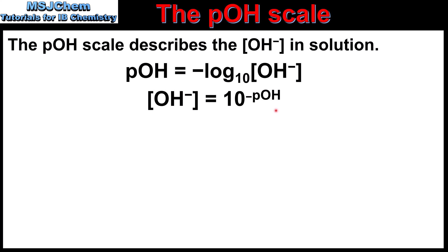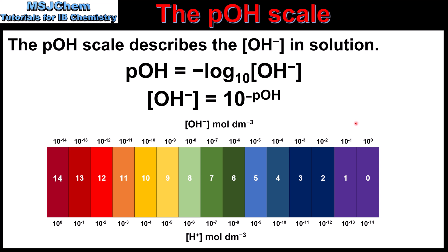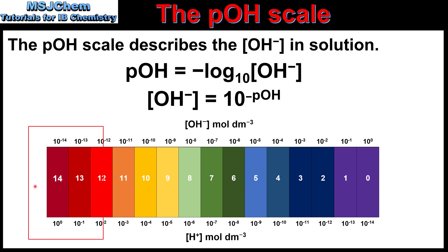Later on in the video, we'll do some calculations using these two equations. Next, we look at the relationship between the concentration of hydroxide ions and hydrogen ions in a solution. Just like the pH scale, the POH scale is an inverse scale, in that a high concentration of hydroxide ions results in a low POH value. A solution with a high concentration of hydroxide ions has a low POH value — for example, a 1 mol dm⁻³ solution of a strong base such as sodium hydroxide would have a POH value of 0 and a pH value of 14. A low concentration of hydroxide ions results in a high POH value — for example, a 1 mol dm⁻³ solution of hydrochloric acid would have a POH value of 14. So strong bases have low POH values and high pH values, and strong acids have high POH values and low pH values.